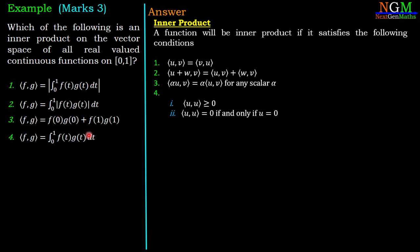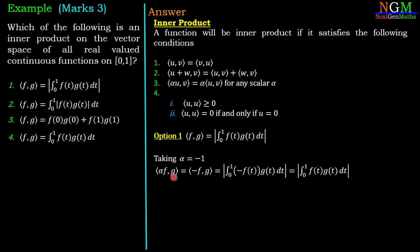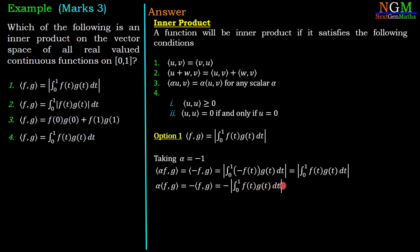We check all four options one by one. For option 1, ⟨f,g⟩ = |∫₀¹ f(t)g(t)dt|. Taking α = −1 and checking condition 3: ⟨αf, g⟩ = ⟨−f, g⟩ = |∫₀¹ −f(t)g(t)dt| = |∫₀¹ f(t)g(t)dt|. But the right-hand side, α⟨f,g⟩ = −|∫₀¹ f(t)g(t)dt|, is negative. These two are not equal, so condition 3 is not satisfied. Therefore option 1 is not an inner product.